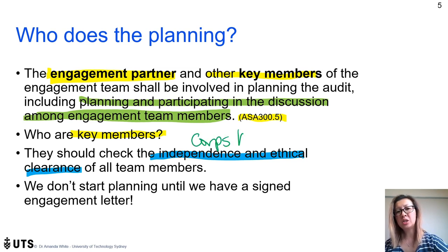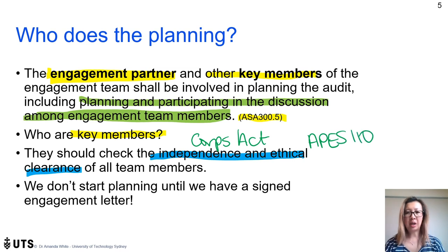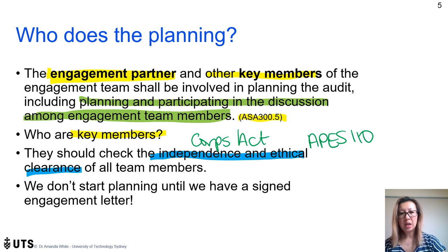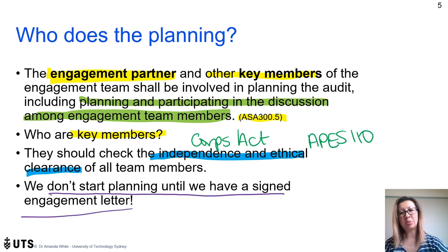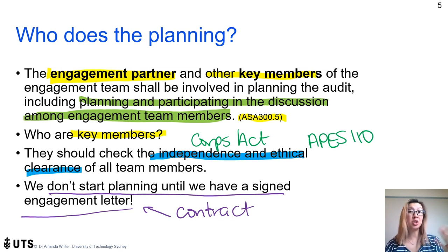We also need to check independence and ethical clearance to ensure everybody complies with the Corporations Act regarding independence requirements and APES 110 for ethical clearances. Importantly, don't start planning the audit until you have a signed engagement letter. The engagement letter is our contract — we don't want to expend effort before we have an agreement, because the client could change their mind.